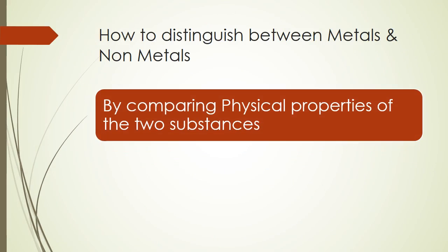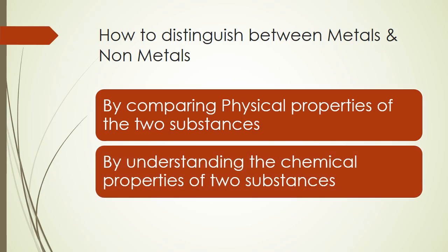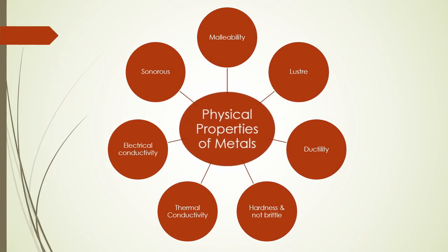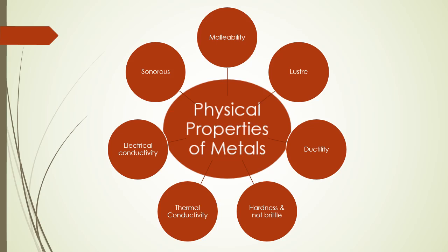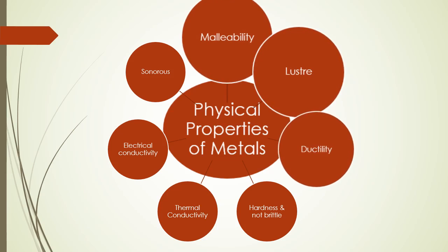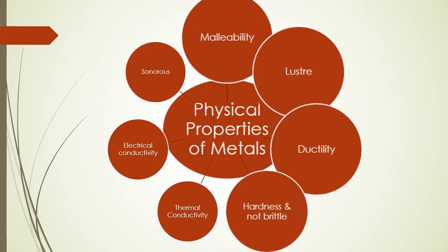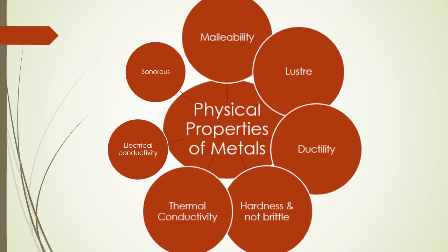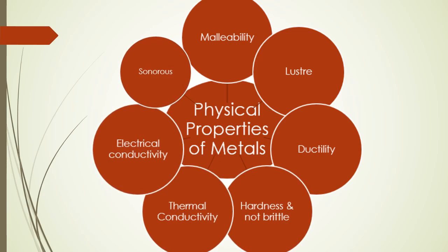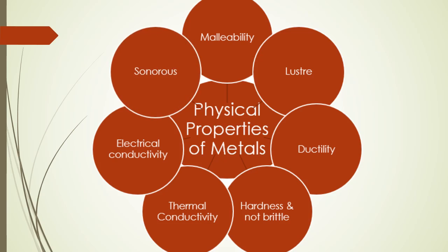To distinguish between metals and nonmetals, we compare their physical properties and chemical properties. The physical properties of metals are: they are malleable, they have luster, they are ductile, they are hard but not brittle, they have high thermal conductivity, high electrical conductivity, and they are sonorous in nature.